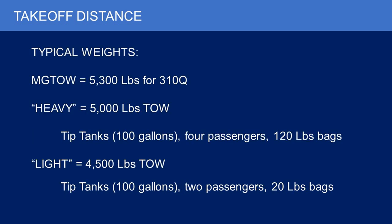The maximum gross takeoff weight for my airplane is 5,300 pounds for a 1974 310Q. I've summarized this into two main weights I typically operate at. I call one 'heavy,' which is 5,000 pounds takeoff weight — about 300 pounds below gross — and that typically means tip tanks full, four passengers, and a fair amount of baggage. Alternatively, there's a 'light' weight of around 4,500 pounds — typically full tip tanks, two passengers, and light bags, perhaps for a day trip or short overnight weekend break.